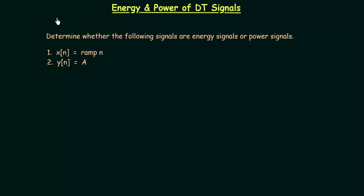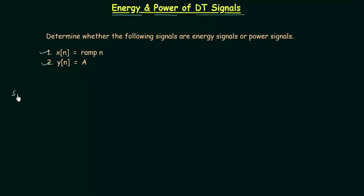We know how to calculate the total energy and average power of a continuous time signal. In this lecture I will explain how to calculate the total energy and average power of discrete time signals. Using the values of total energy and average power, we will decide whether a signal is a power signal or energy signal. The first signal is x[n] which is equal to ramp(n), and the second signal is y[n] which is equal to A. We will first calculate the total energy and average power of signal x[n].